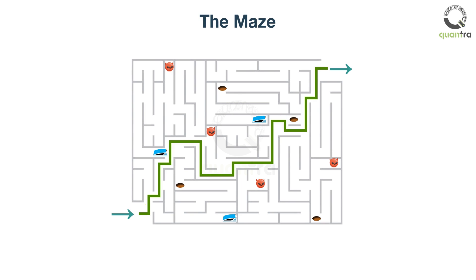Reinforcement learning tries all sorts of combinations to come up with the best solution. As you have guessed, there is no right or wrong answer when it comes to the direction. But it is more of optimizing the reward.